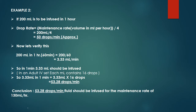Example 2: If 200 milliliters is to be infused in 1 hour. Drop rate = 200 ÷ 4 = 50 drops per minute approximately. Verification: 200 mL ÷ 60 = 3.33 mL/min. In an adult intravenous set, 3.33 mL/min × 16 drops/mL = 53.28 drops per minute. Conclusion: 53.28 drops per minute fluid should be infused for a maintenance rate of 200 milliliters per hour.